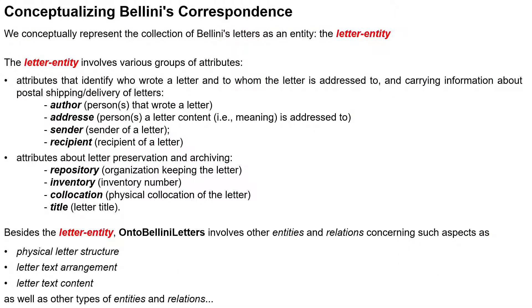We conceptually represent the collection of Bellini letters as an entity: the letter entity. The letter entity involves various groups of attributes — those that identify the letter, to whom the letter is addressed, and querying information about postal shipping and delivery. These include author, read receipt, sender, and recipient. There are also attributes about letter preservation and archiving: repository, inventory, collocation, and title. Besides the letter entity, Onto Bellini Letters involves other entities and relations concerning physical letter structure, letter text arrangement, and letter text content.